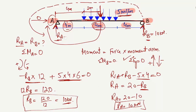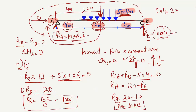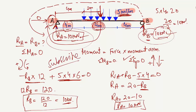So Ra = 10 kN and Rb = 10 kN. Since the total load acts at the center of the beam, it is equally distributed: each support takes half. The total load is 5 × 4 = 20 kN, and 20 ÷ 2 = 10 kN. That's why we get 10 kN at both A and B. Hope you guys understand how to find support reactions. Don't forget to subscribe for Daily 7 Engineering videos. Thank you for watching.